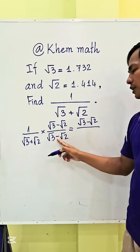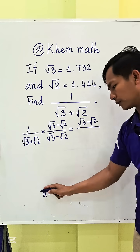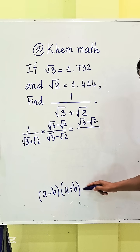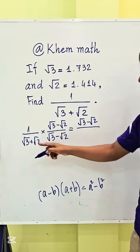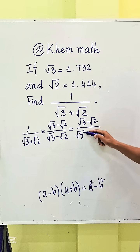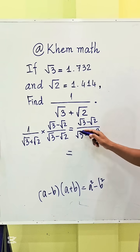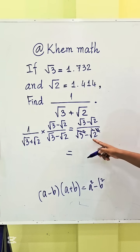For the denominator, we use the formula (A minus B)(A plus B) equals A squared minus B squared. So we get square root 3 squared minus square root 2 squared. Simplifying, square root with square cancels, giving us 3 minus 2.